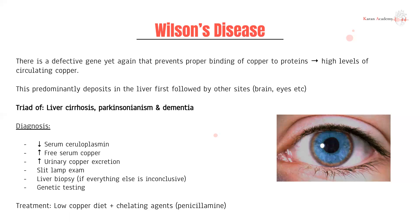A triad of Wilson's disease you need to know is liver cirrhosis, Parkinsonism, and dementia in a young patient — if you have these three, always consider Wilson's disease. To diagnose it: you'd have low levels of ceruloplasmin, which is the protein that binds copper. A slit-lamp exam is a good first-line test to look for Kayser-Fleischer rings.